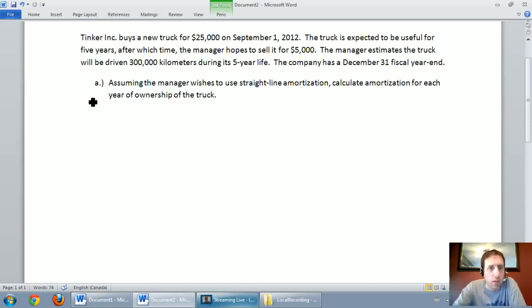Tinker Inc buys a new truck for $25,000 on September 1st, 2012. The truck is expected to be useful for five years, after which time the manager hopes to sell it for $5,000. The manager estimates the truck will be driven 300,000 kilometers during its five-year life. The company has a December 31st fiscal year end. Assuming the manager wishes to use straight line amortization, calculate amortization for each year of ownership of the truck.